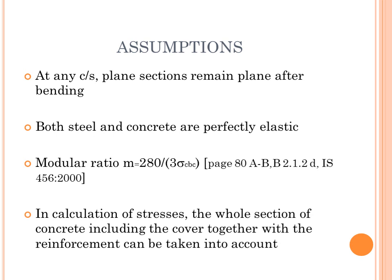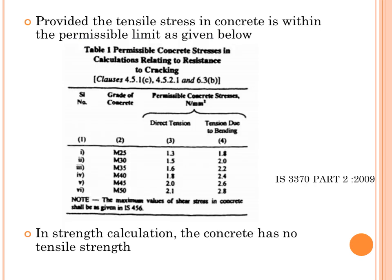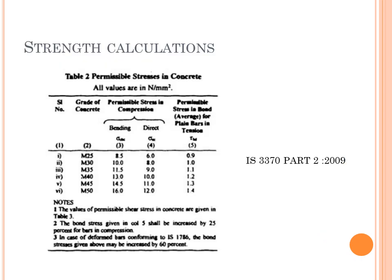For calculation of stresses for both flexural and direct tension, or for a combination of both, relating to resistance to cracking, the whole section of concrete including the cover together with the reinforcement can be taken into account, provided the tensile stress in concrete is within the permissible limit as given in Table 1 of IS 3370 Part 2 (2009). In strength calculation, concrete has no tensile strength.